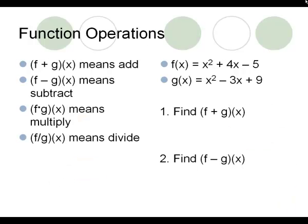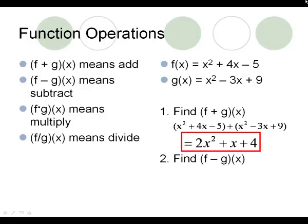You can add, subtract, multiply, and divide two functions together. If we add Frank and George together like we are in number 1, I take Frank's equation, I add to it George's equation, and I add like terms. So x squared plus x squared would be 2x squared, 4x plus negative 3x would be 1x, and negative 5 plus 9 would be 4. So 2x squared plus x plus 4 is your final answer.